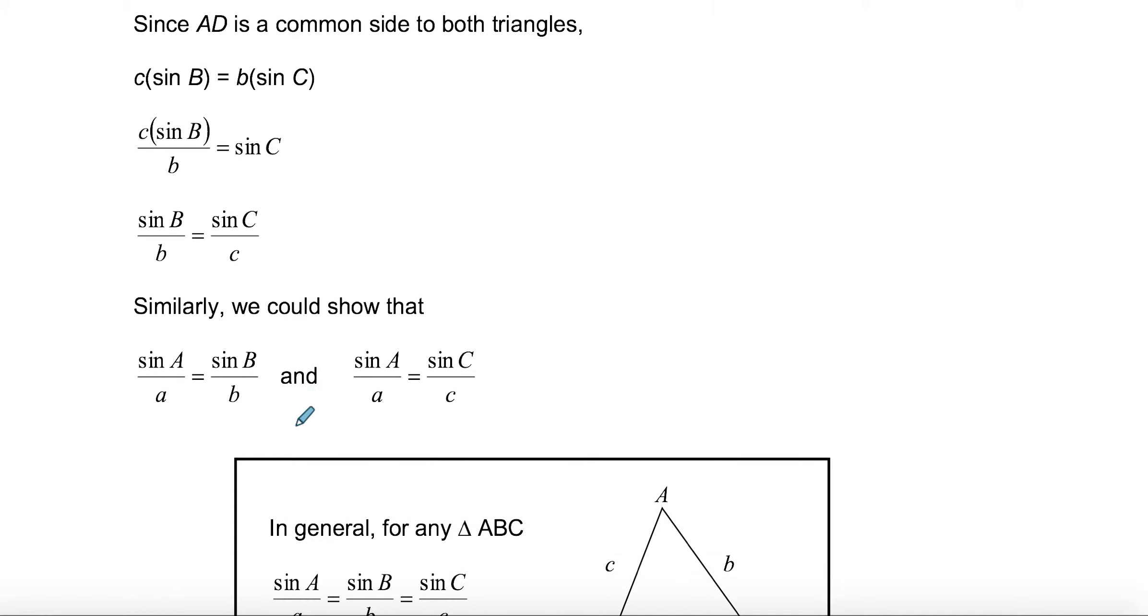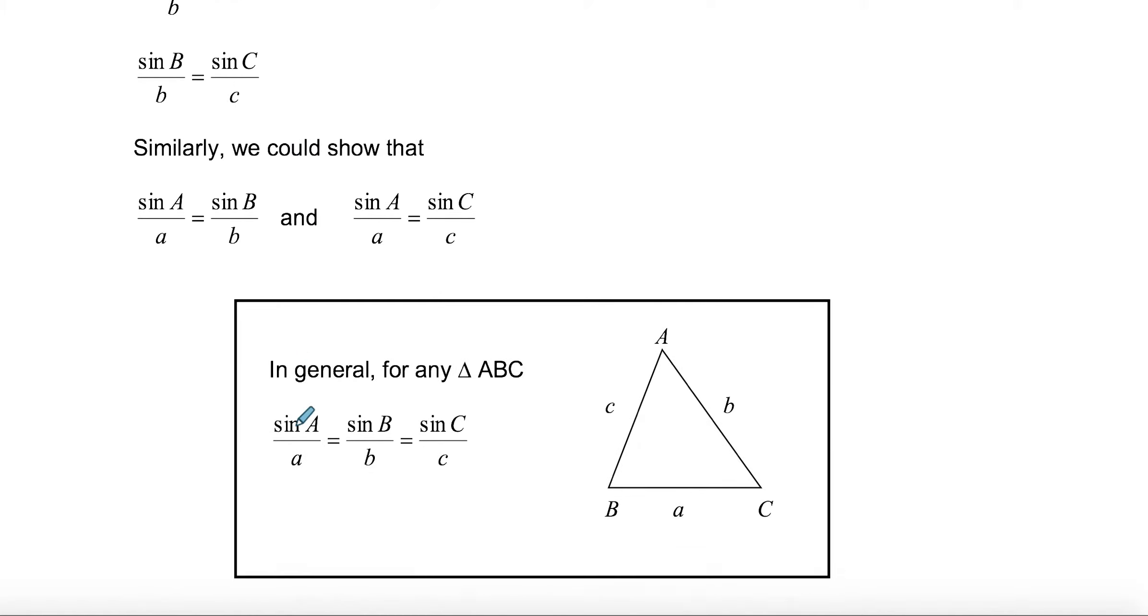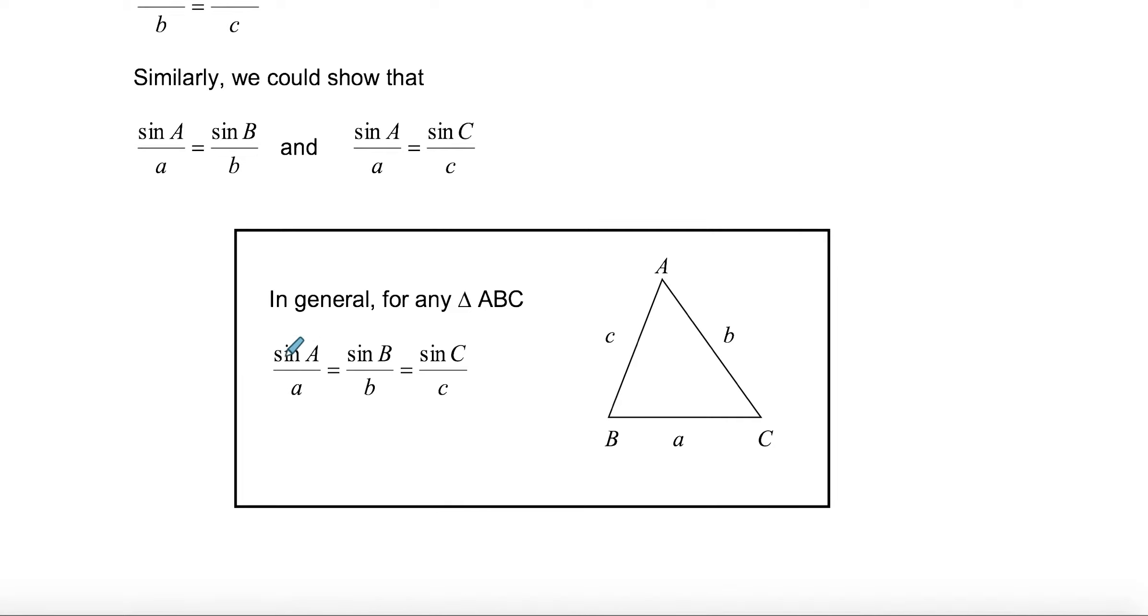The sine law is usually written like this: sine A over a equals sine B over b equals sine C over c. Capital letters are the angles, lowercase letters are always the sides. We get only two ratios and use those, and one of these values can be unknown. You're going to have to know three values out of four, because then we just cross multiply and find the unknown value.